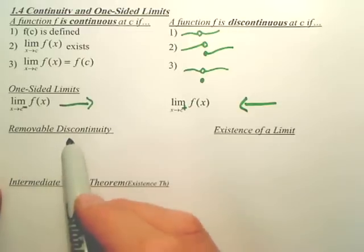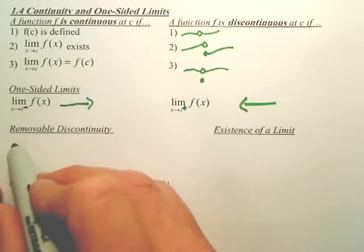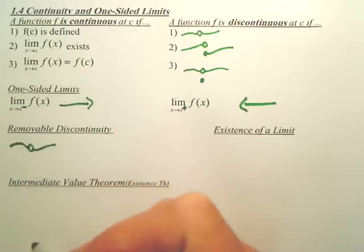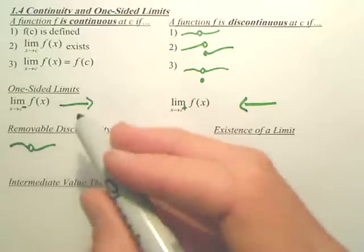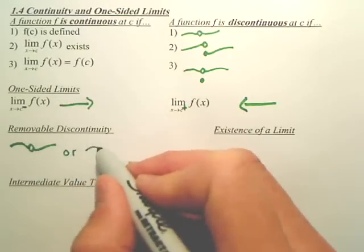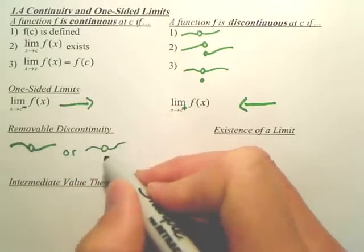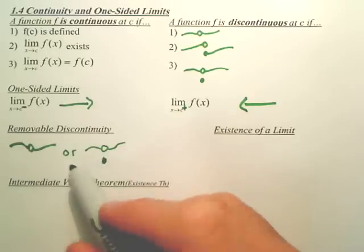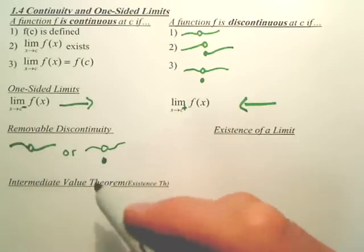Removable discontinuities. A removable discontinuity is that. That is basically a removable discontinuity. Or that. They're both the same thing. It's just this has a value as well. Those are both removable discontinuities.